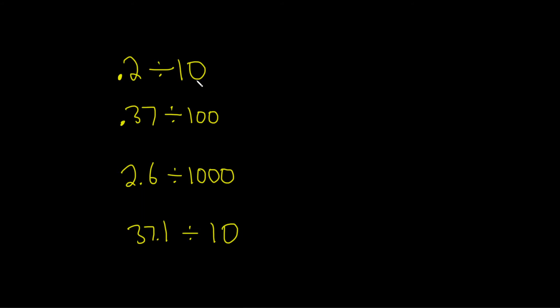Here in this first example, we have one zero. So we're going to take this decimal and just go left one time. One, boom, we'll put a zero here. So the answer is .02, because we went left one time from .2.